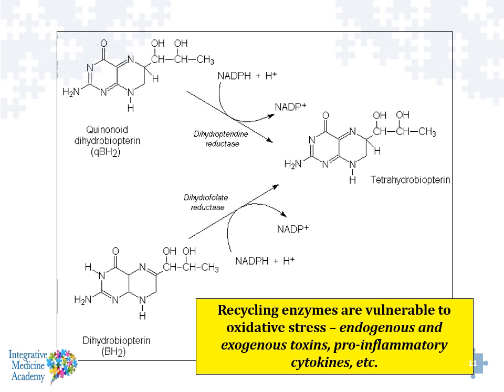An important thing to recognize about chemicals like tetrahydrobiopterin is they have to be recycled — from an inactive to an active state. These recycling enzymes are very vulnerable to oxidative stress. So endogenously produced toxins within the body, as well as acquired external chemicals and things that trigger inflammation like chronic infections, could alter the levels and the effect of something like BH4.